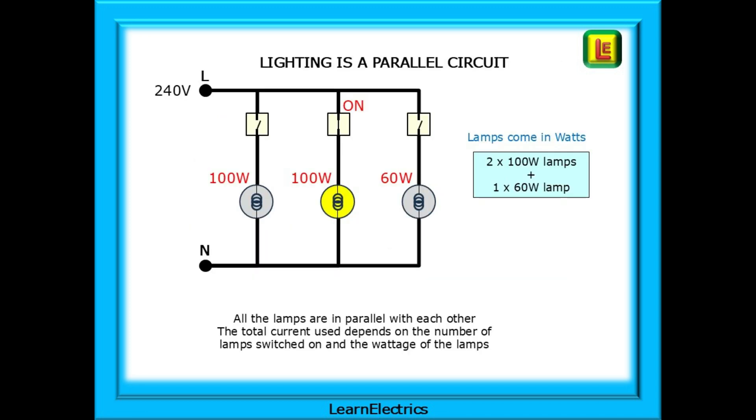Lighting is a parallel circuit. Each lamp is connected across the AC supply, which we will call 240 volts in these examples. All the lamps are in parallel with each other. The total current used depends on the number of lamps switched on and the wattage of the lamps.